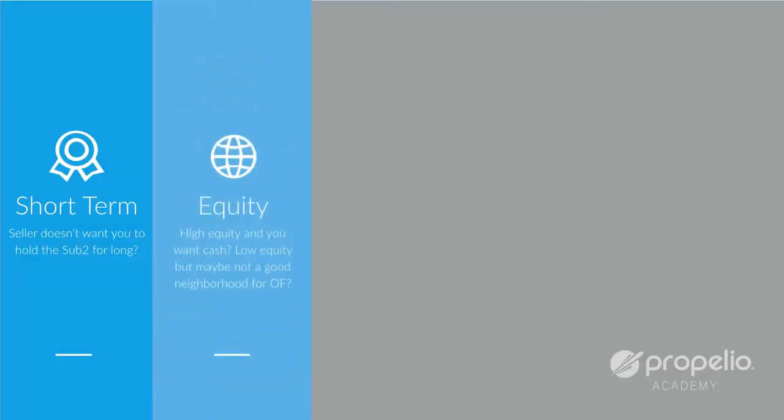Another reason might be equity. What if you've got really high equity in this deal and you just want cash? Maybe you're able to take over Subject 2 for $88,000 on a house worth $250,000 that needs $20,000 worth of work. There's nothing wrong with taking it down Sub 2 and selling it out for cash at that point.